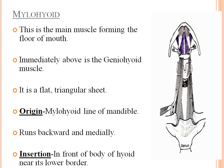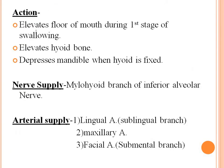The mylohyoid is the main muscle forming the floor of the mouth, with the geniohyoid immediately above it. It is a flat triangular sheet. Origin is the mylohyoid line of the mandible; it runs backward and medially. Insertion is into the front of the body of the hyoid near its lower border. Action: elevates the floor of the mouth during the first stage of swallowing, elevates the hyoid bone, and depresses the mandible when the hyoid is fixed. Nerve supply is the mylohyoid branch of the inferior alveolar nerve. Arterial supply is the lingual artery, maxillary artery, and facial artery.